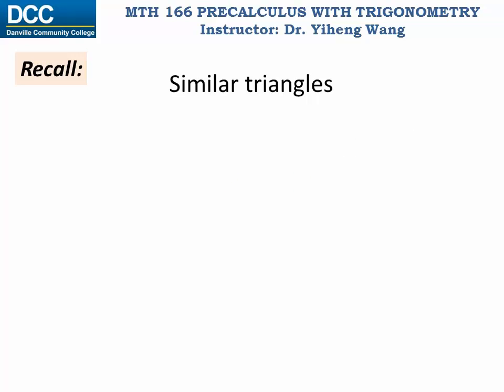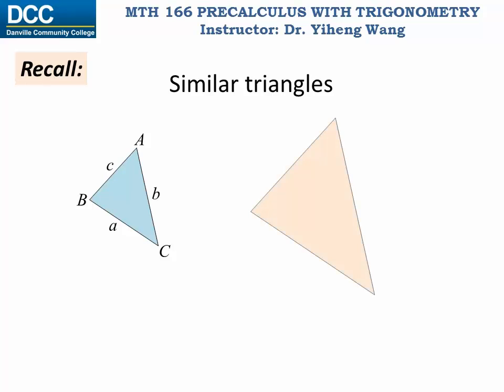Let's first review the similar triangles that we learned in geometry. Say there is a triangle, and the three angles are known as A, B, and C in capital letters, and the three opposite sides are known as a, b, and c in small letters. And there's another triangle,